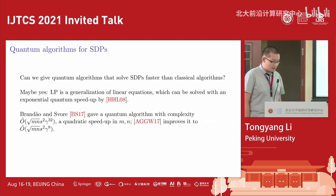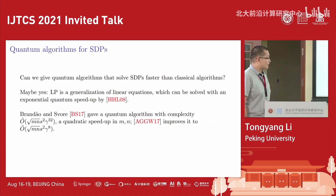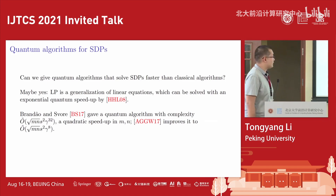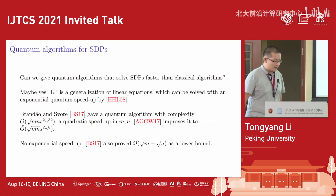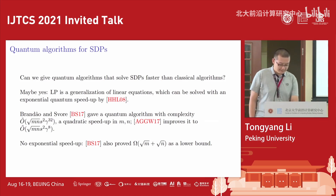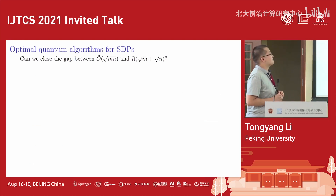The answer is yes. There was prior work that gives a quantum algorithm with complexity like square root of M times square root of N — a quadratic speedup in both parameters. A follow-up by van Apeldoorn et al. improved the condition number dependence to gamma to the eighth. However, it was also shown that quantum algorithms cannot give an exponential speedup for SDPs; the quantum lower bound is square root of M plus square root of N. So gaps remain between the best known quantum upper and lower bounds.